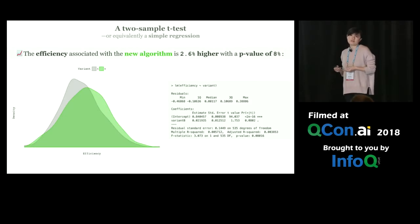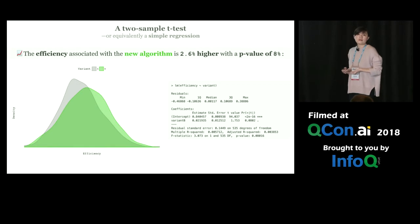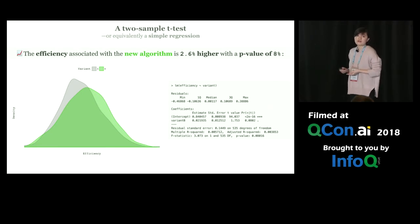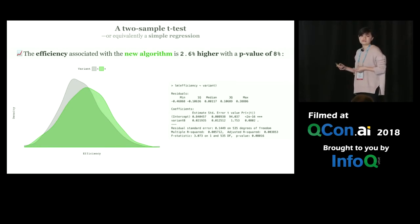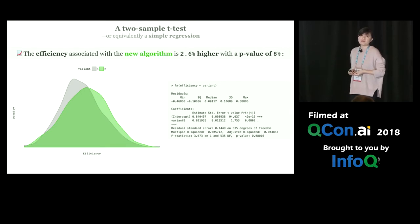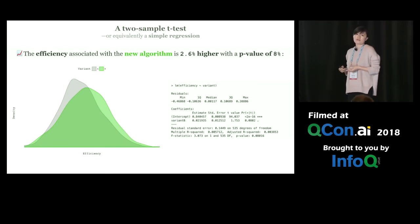After running the experiment and collecting all the metrics data, we plot the distribution of the outcome — for example, efficiency — for both the new and existing algorithm. It seems the new algorithm has a higher mean. To figure out whether this difference is significant, we run a two-sample t-test. Based on the test, the efficiency associated with the new algorithm is 2.6% higher with a p-value of 8%. The smaller the p-value, the more confident we are that the improvement is significant and not due to randomness. A two-sample t-test is equivalent to a simple linear regression where the only predictor variable is the algorithm variant.